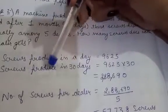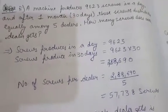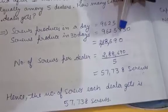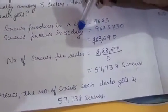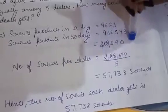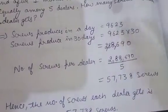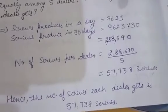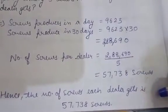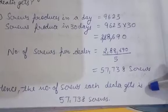Screws produced in a day are given, and we need to find the total for 30 days. Since we are going from smaller to larger, we multiply: 9,623 multiplied by 30 gives 2 lakh 88,690 screws produced in one month. Now we distribute among five dealers, so we divide the total screws by 5. Dividing 2 lakh 88,690 by 5 gives 57,738 screws per dealer.